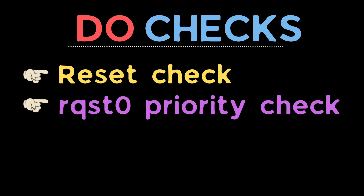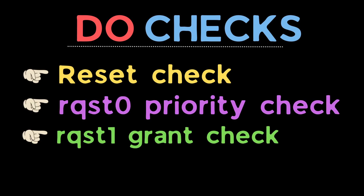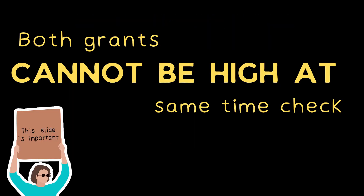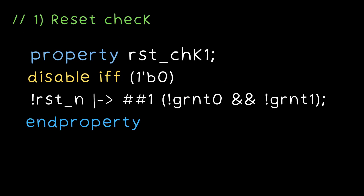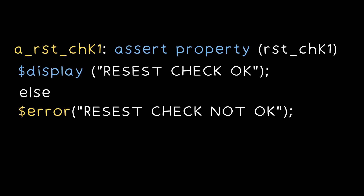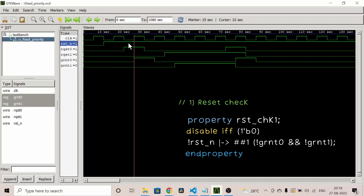Now let's write assertions to check the design. In the assertion check module, all the ports are input ports. We will be using the default clocking block — with this, we don't have to write the positive clock edge every time in a property. The 'disable iff' is used to stop assertions upon reset; with default disable iff, we don't have to write it in every property.